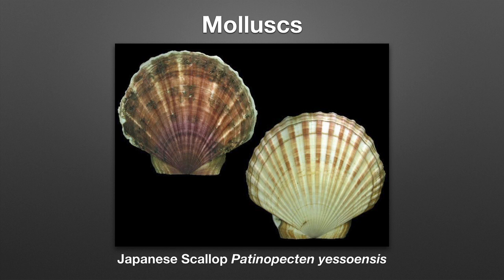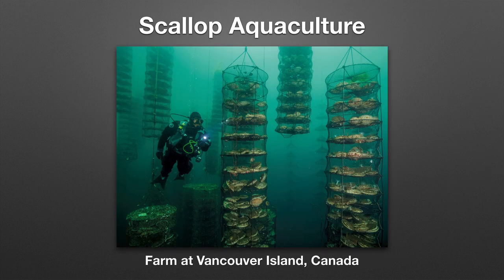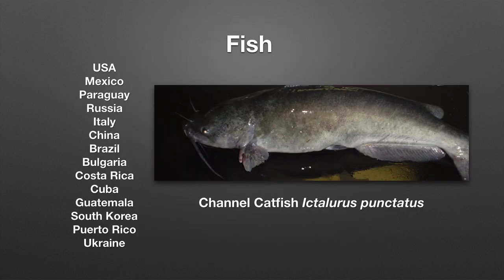Mollusks represent another major aquaculture product. In this picture you see a Japanese scallop and lantern-type nets that are suspended with different layers holding the scallop. Fish are also a major part of world aquaculture production. Channel catfish, Ictalurus punctatus, is grown all over the world — it is a major product of the U.S. but is also cultured in Central America and Asia.